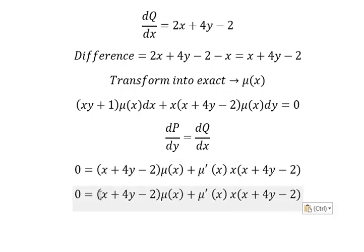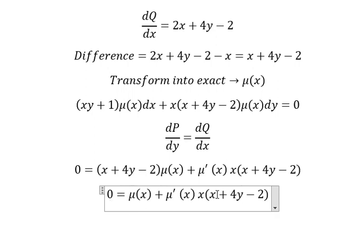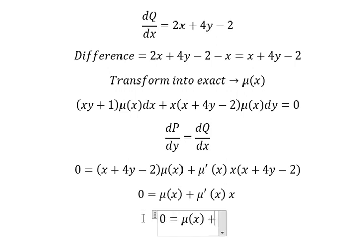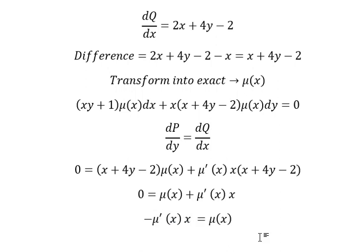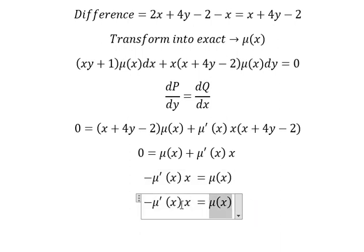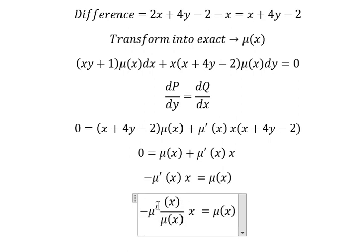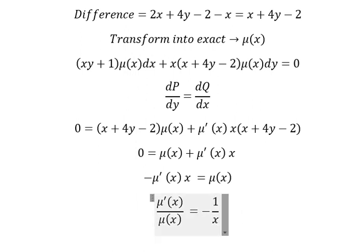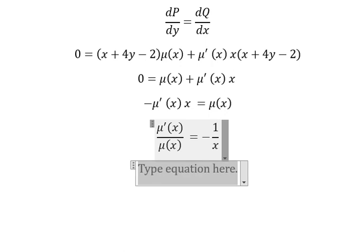Later, we divide both sides by this one, and you get like this. I will put this one in here. Next, we divide both sides by negative S. Next, we put the integration for both sides.